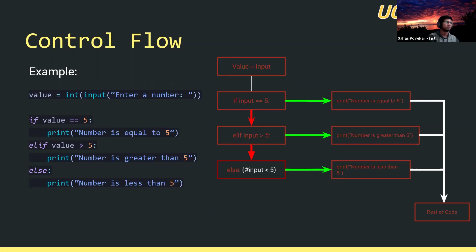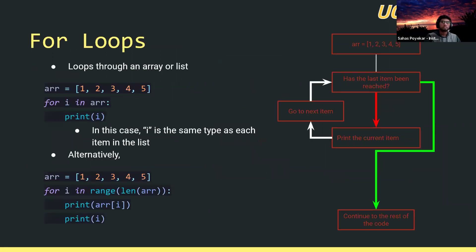Let's move on to loops. The idea of loops is that if we want to run a piece of code over and over again for an indefinite amount of time, we use loops to repeat that code. These loops also require Boolean algebraic statements. For loops are a bit different — one main use case is they allow us to loop through lists, arrays, and strings.